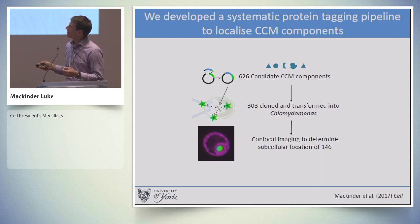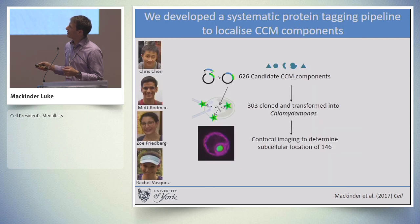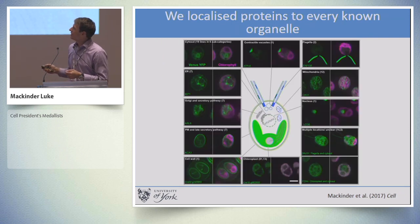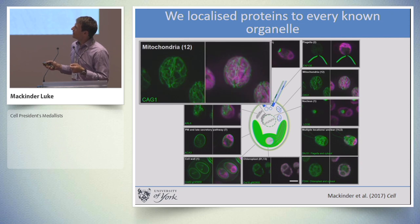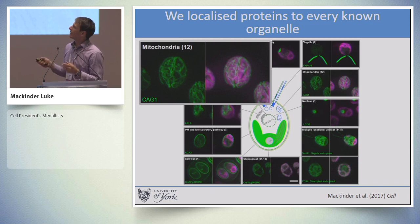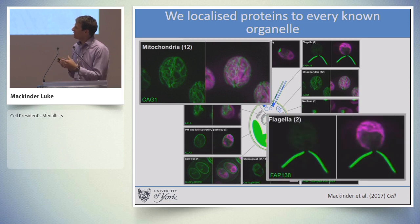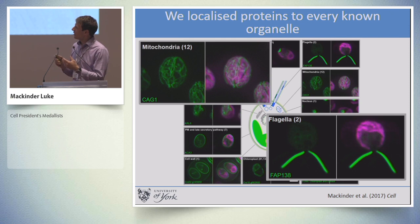I just want to highlight that this is a large team effort, and there's a large number of Stanford undergraduates who helped out on this project. We started to localize proteins to pretty much every known organelle in Chlamydomonas — highlighted in green are YFP-tagged fluorescent proteins and in magenta is the chlorophyll. This includes a mitochondrial localized protein which forms beautiful networks around the chloroplasts, and a flagella-localized protein. We're also building evidence that the flagella may be involved in inorganic carbon sensing.